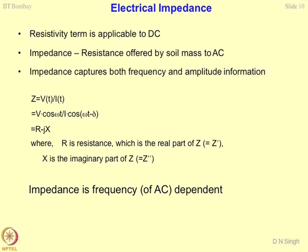The impedance Z can be written as R − jX, where R is the resistance which is the real part of impedance, defined as Z′, and X is the imaginary part of Z, defined as Z″.